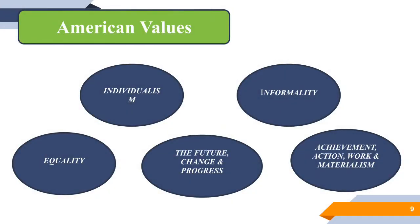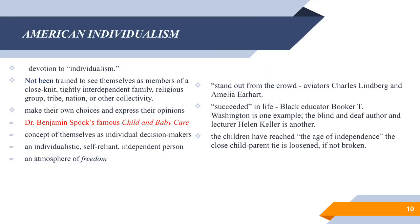What do Americans value? Americans value individualism, equality, informality, the future, change and progress, achievement, work, action, and materialism. The most important thing about Americans is probably their devotion to individualism. They have been trained since very early in their lives to consider themselves as separate individuals who are responsible for their own situation. They have not been trained to see themselves as members of a close-knit, tightly interdependent family, religious group, tribe, nation, or other collectivity. They like to make their own choices and express their opinions.